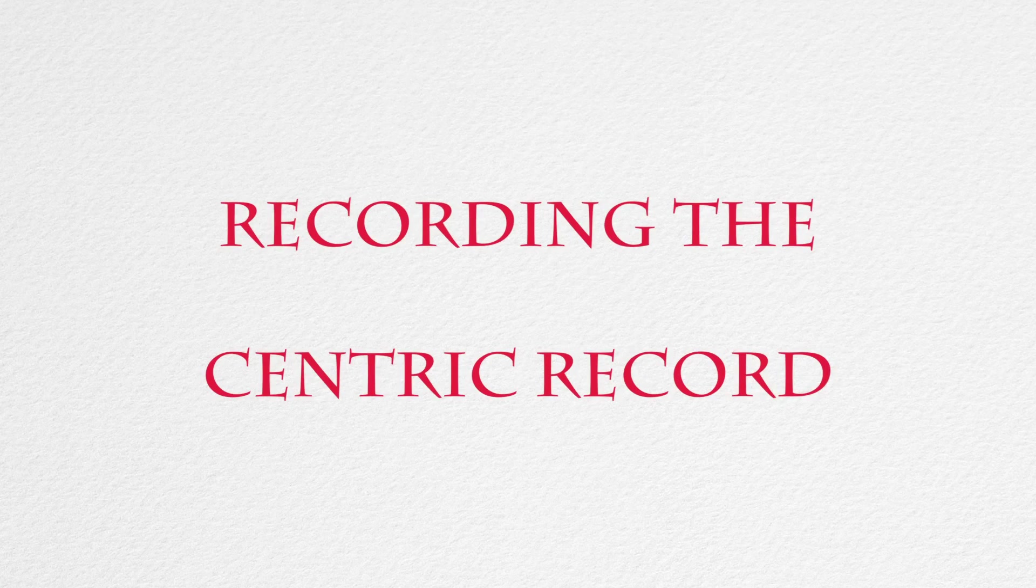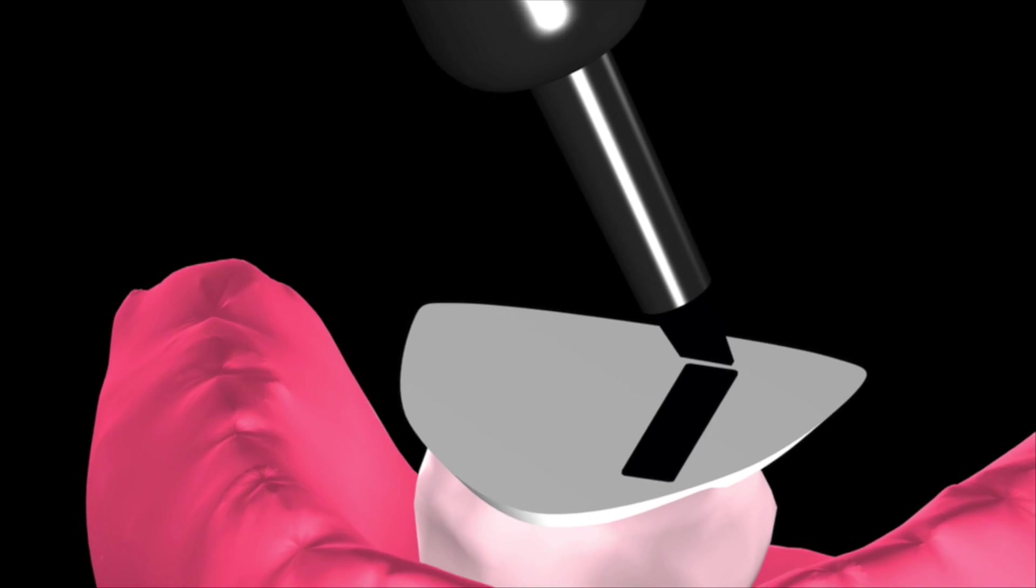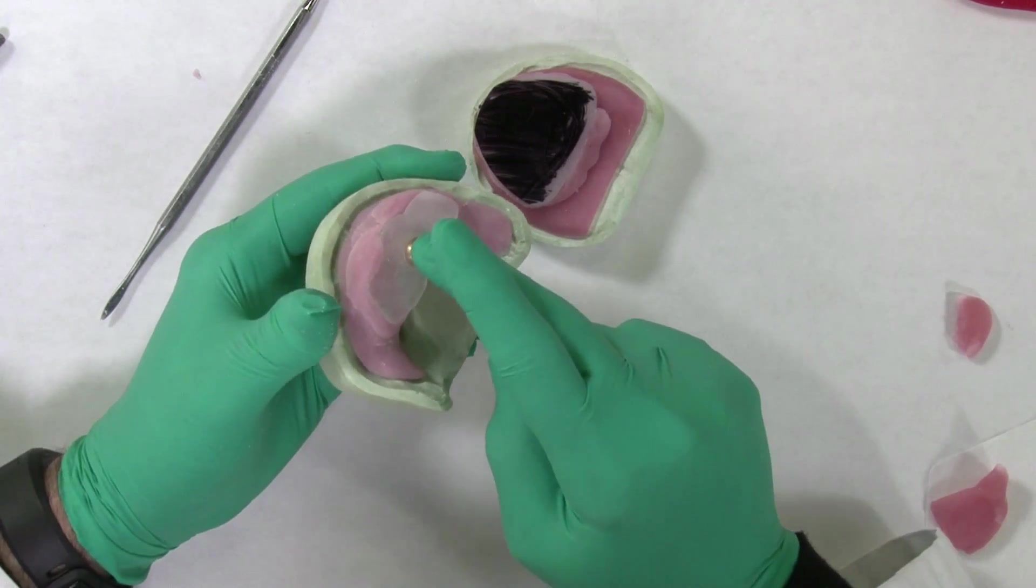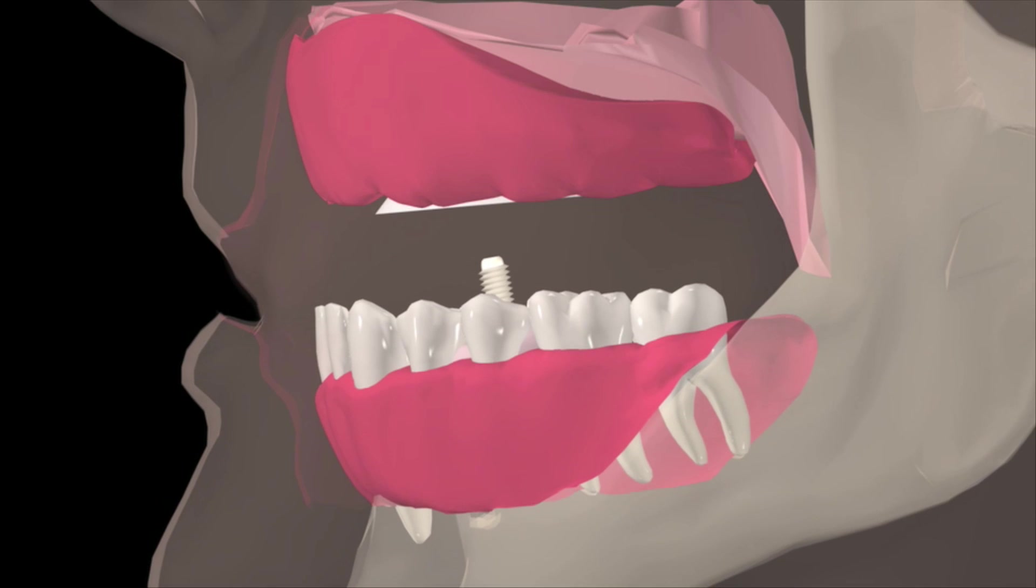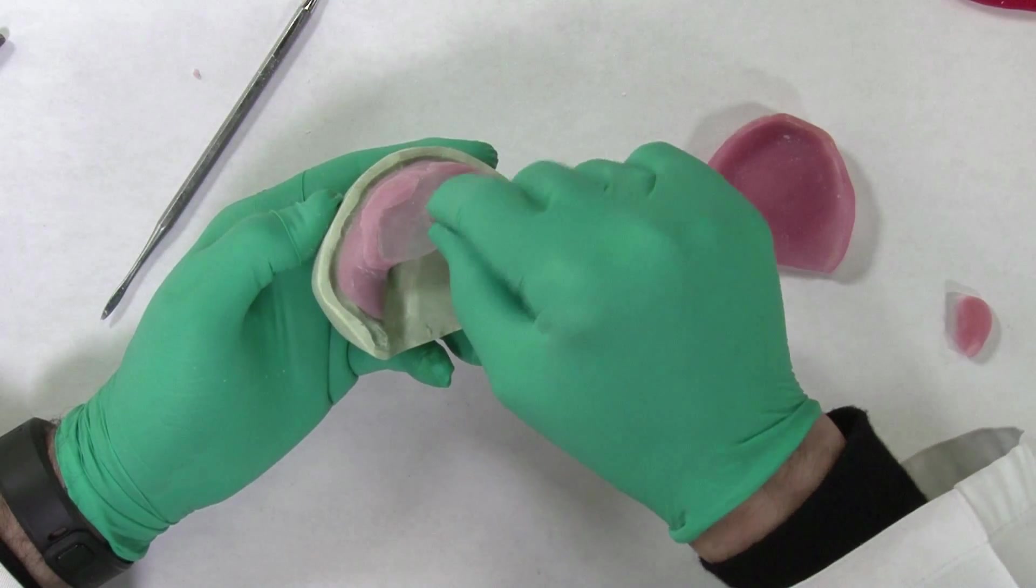Recording the centric record. Regardless of the occlusal configuration, the centric record is obtained in the same manner. The striking plate is coated with ink. The vertical pin is adjusted until it is holding the jaws at the desired vertical dimension of occlusion. Once again, it is important that the vertical pin contact the striking plate in a perpendicular position. If not, adjust the position of the pivoting nut within the pin receiver until such position is achieved.